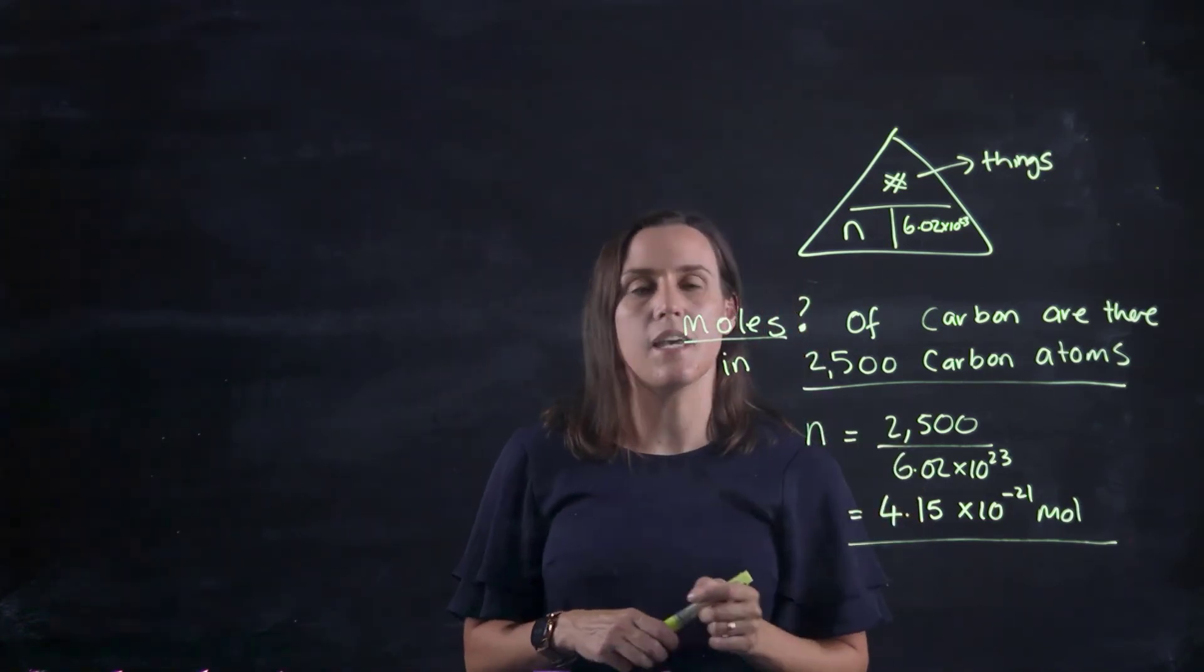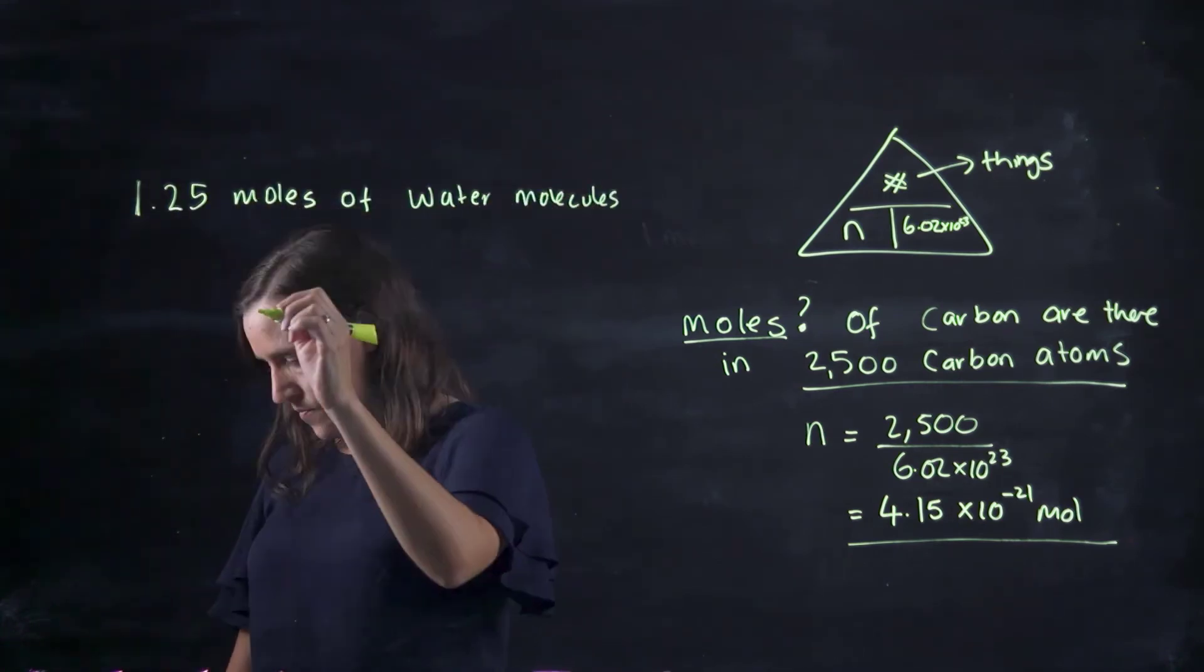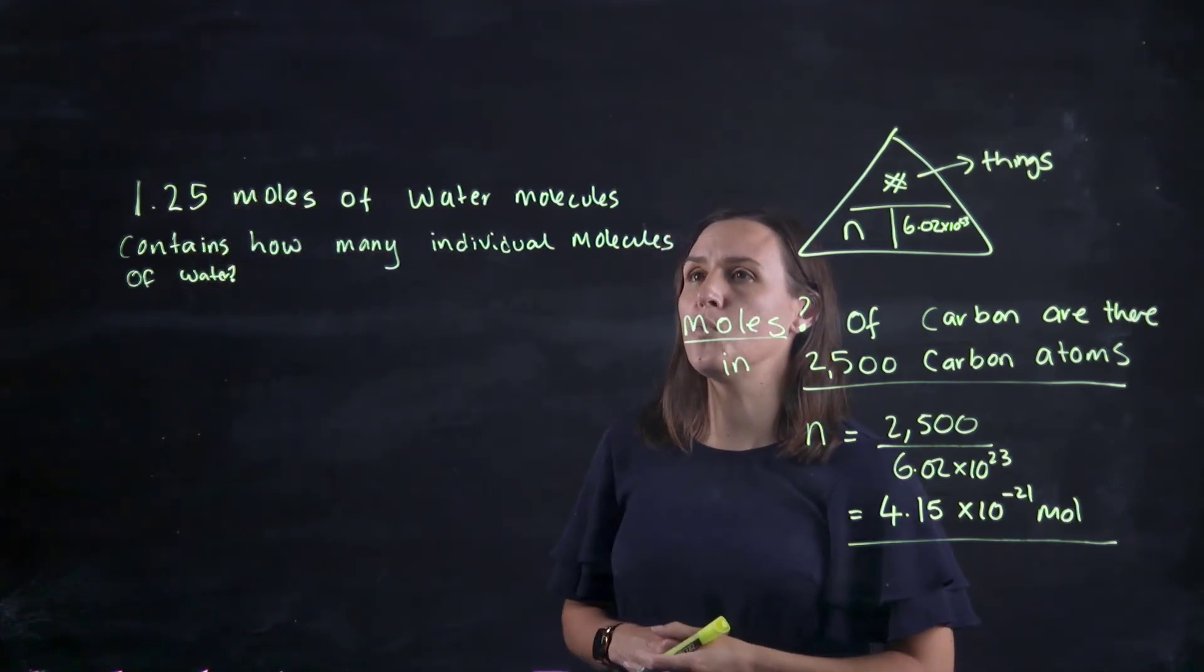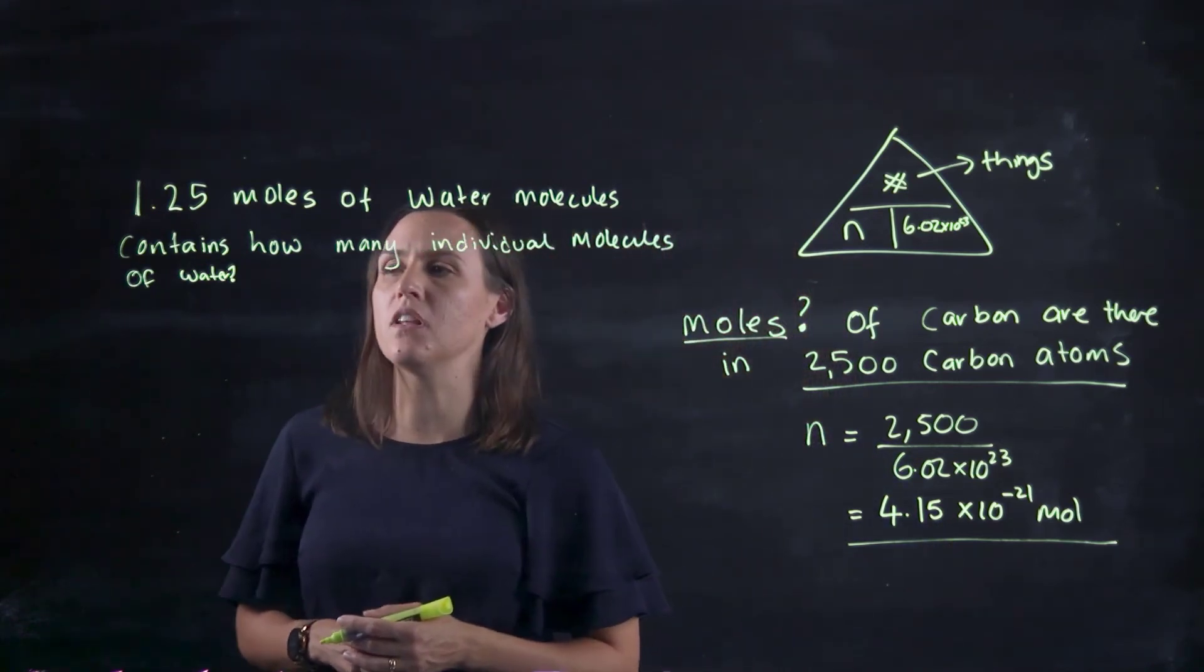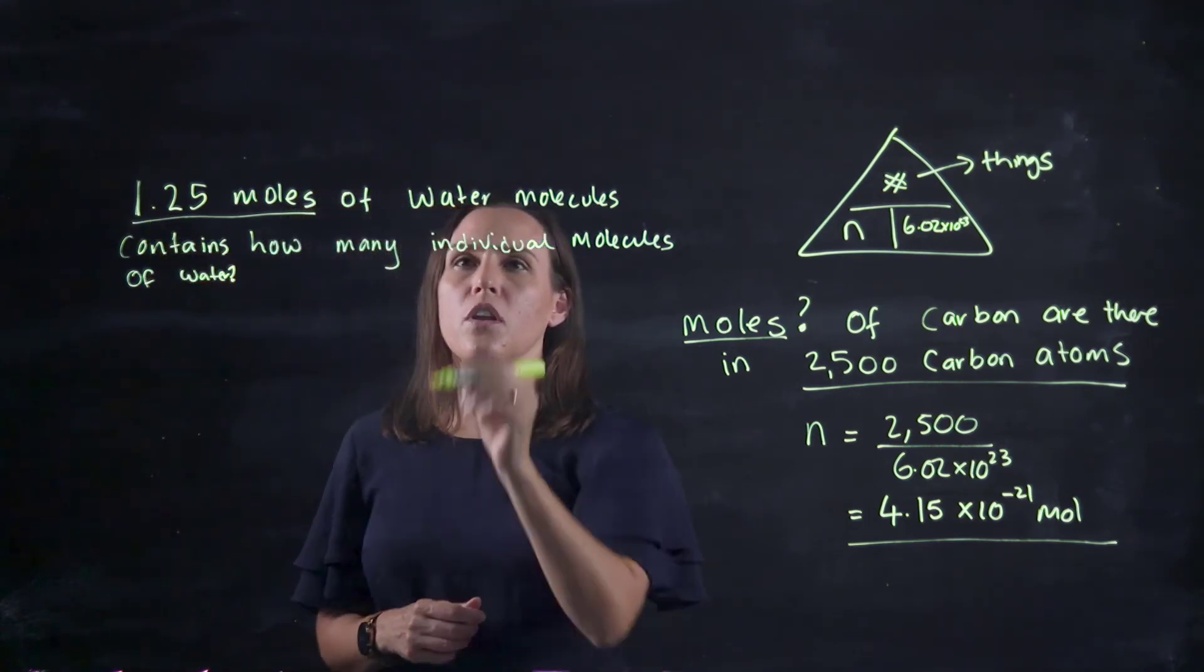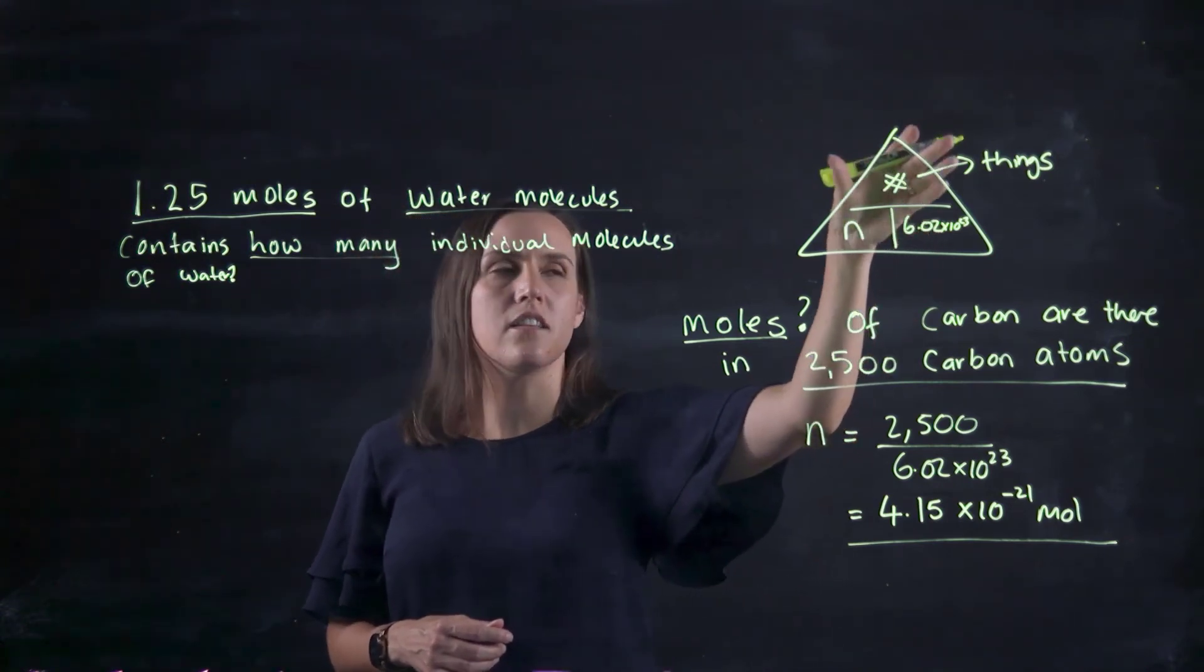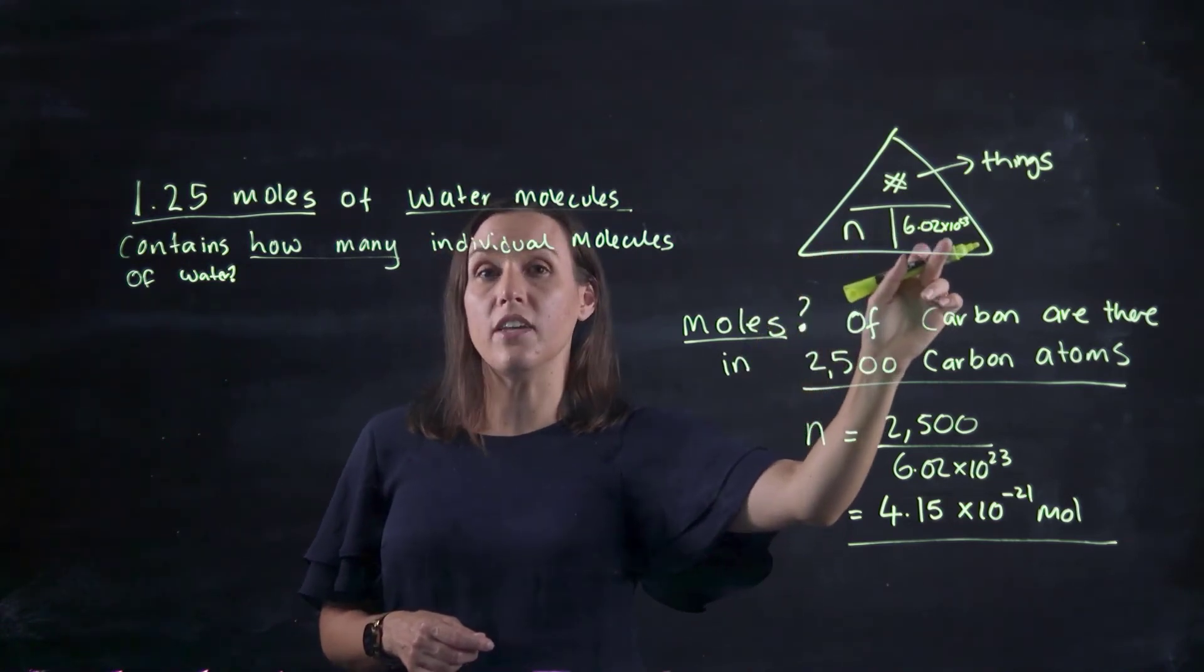Let's have another example. In this example, we've got 1.25 moles of water molecules. How many individual molecules of water does this contain? We've got our value of moles, we're dealing with water molecules, and we want to know how many there are. We're trying to find out the top - how many. We've got our moles and we know Avogadro's number.